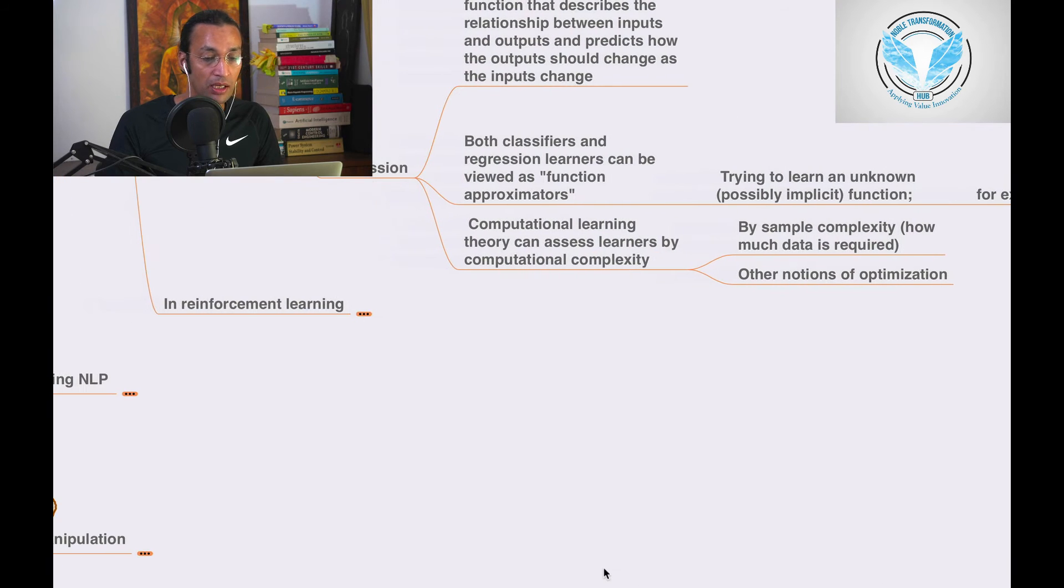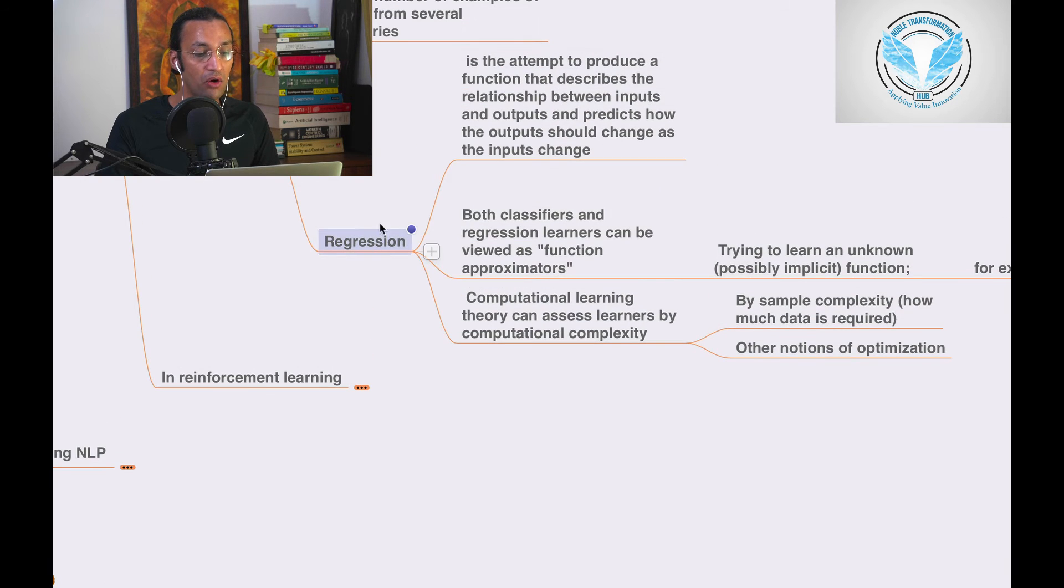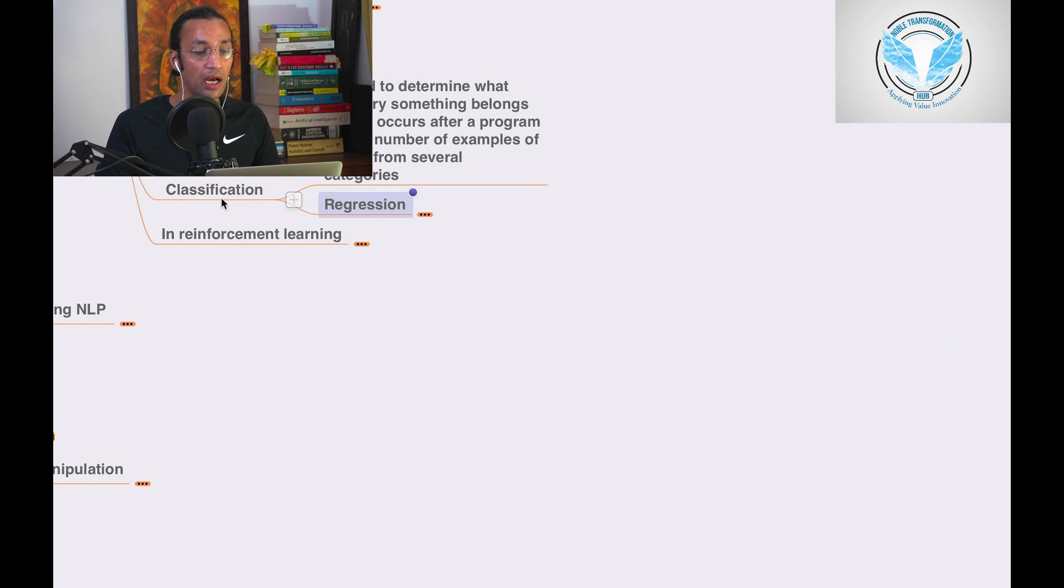Computational learning theory can assess learners by computational complexity - how much data is required and other notions of optimization. This is how regression and classification are done.